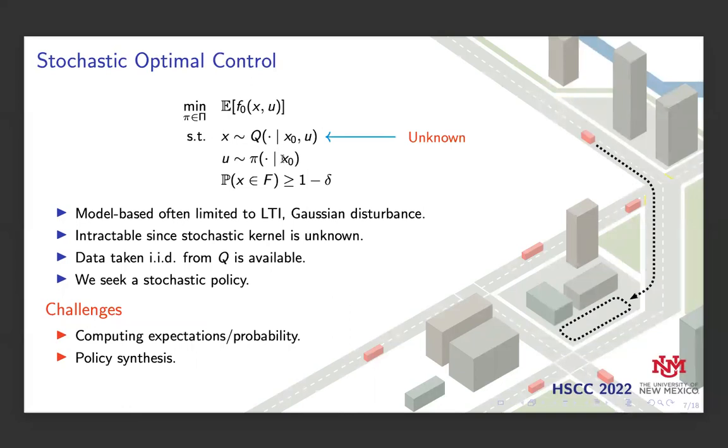The general problem that we consider is this stochastic optimal control problem, where we seek to minimize some expected cost by selecting a stochastic policy pi. The optimization is subject to the system dynamics, represented as a stochastic kernel queue, and possibly to some operating constraints, where we seek to guarantee that the trajectory remains within some user-defined feasible set f with at least a desired probability. Model-based approaches often rely upon linear dynamics and known disturbances to enable tractability. Here, we assume that the stochastic kernel is unknown, which makes the problem intractable.